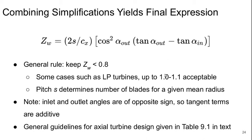In Table 9.1 of the textbook, there's some general guidelines for acceptable values of various design parameters for axial turbines to summarize what we've gone through here.